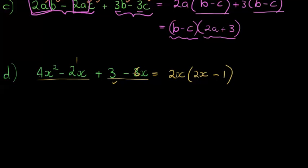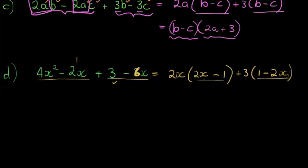Let me correct a mistake in the question — that should be a 6. So for the second group, I can take a 3 out of both terms. Taking out 3 gives plus 3, and I'm left with 1 minus 2x. Now I notice we have two grouped expressions, but there's a small problem.